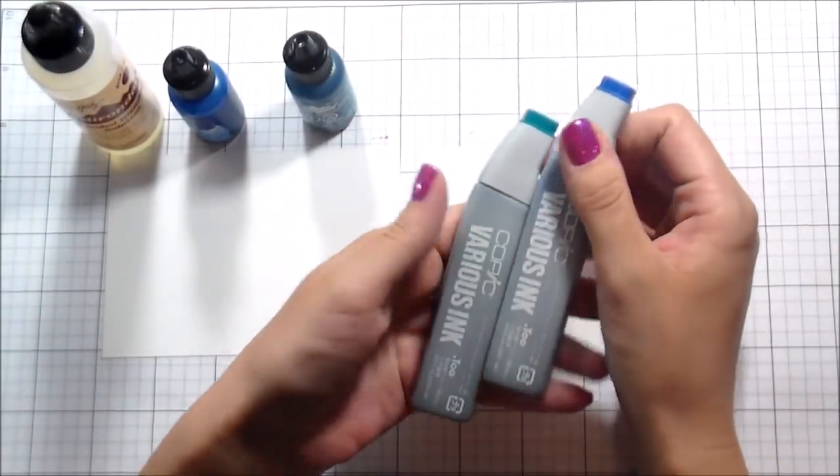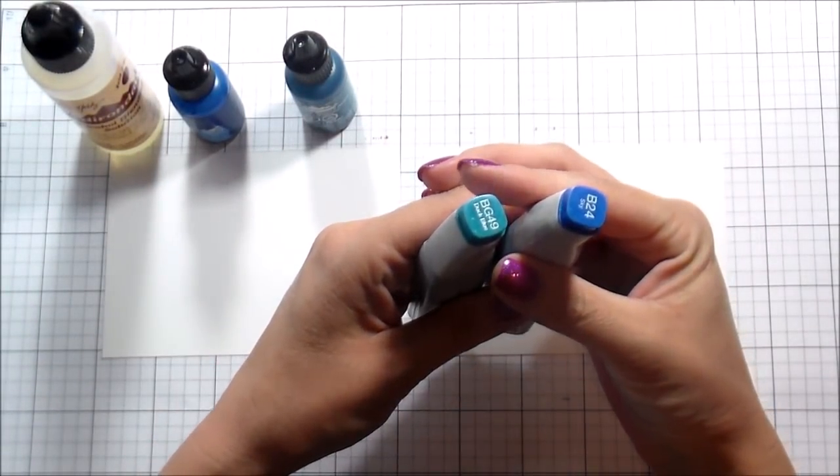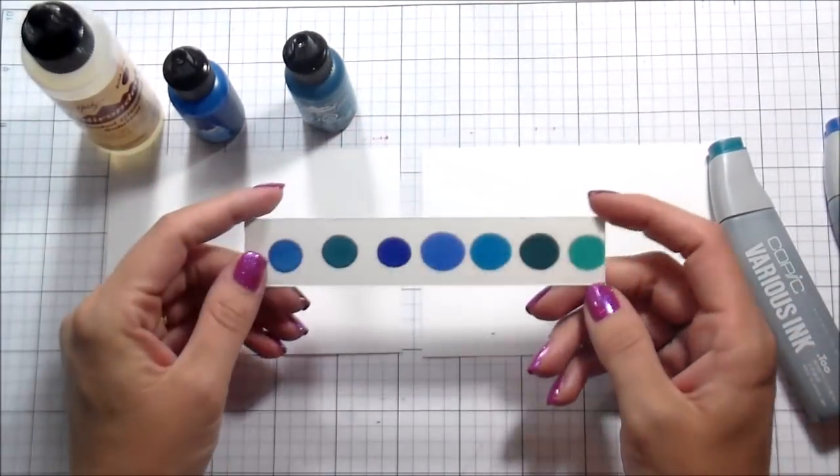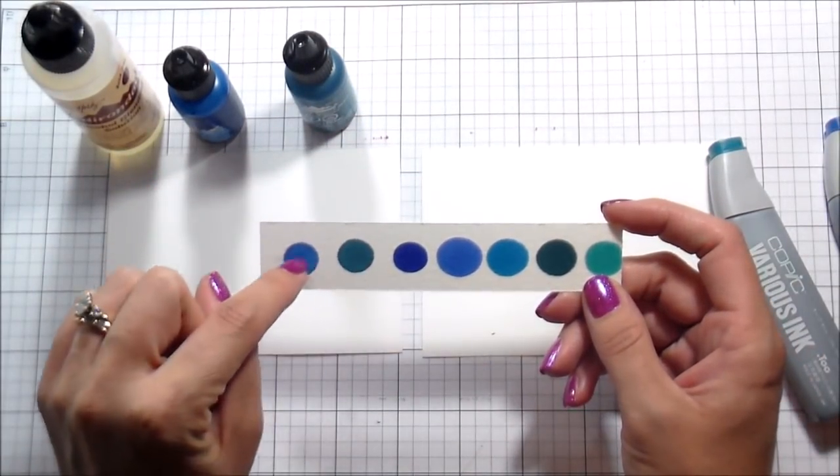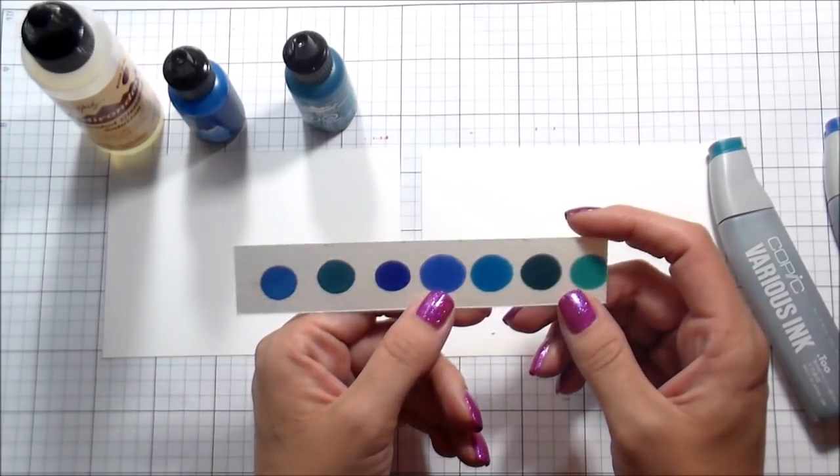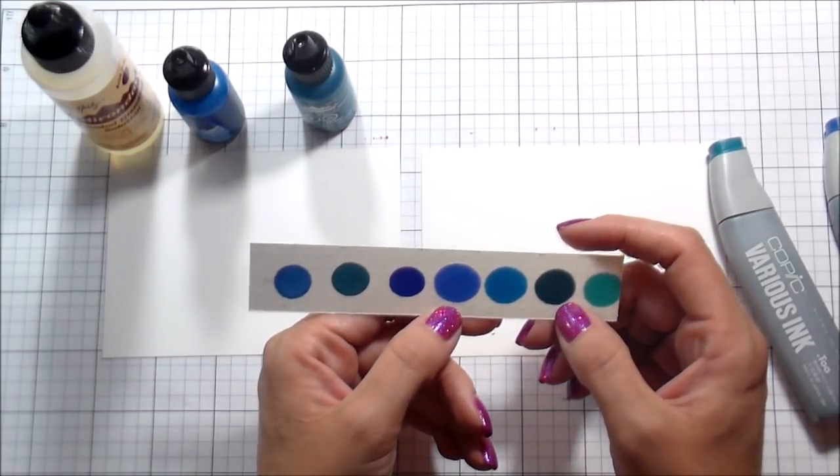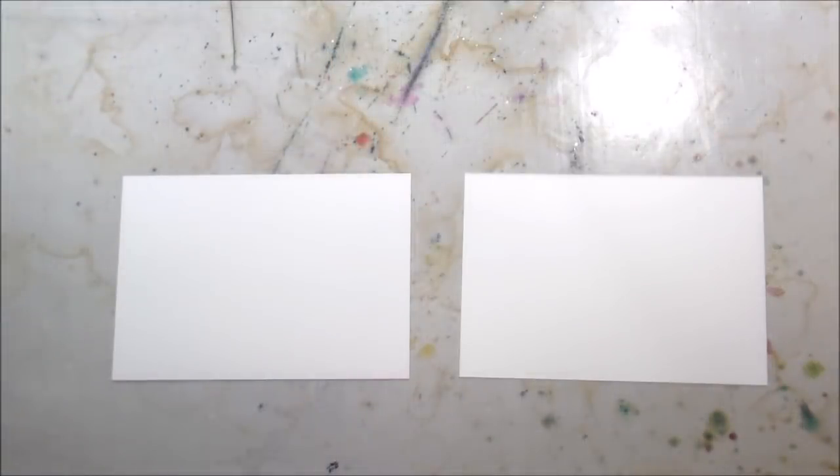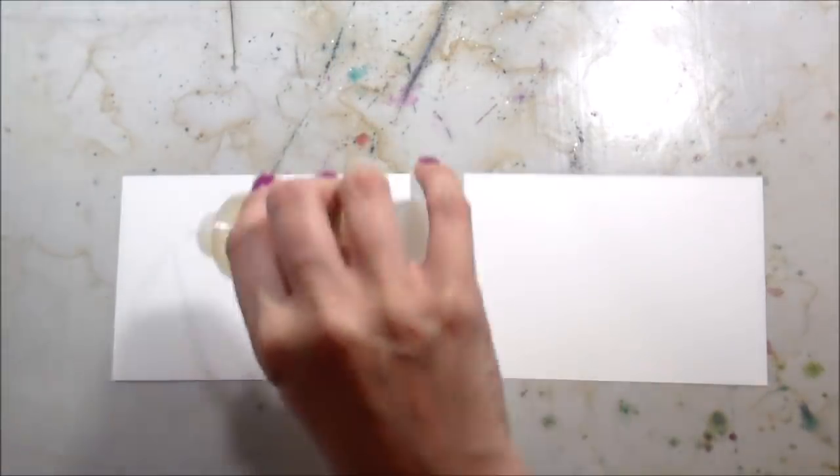So for this comparison, we're using actual alcohol inks and the mixative. And then for the other side, I'm going to use Copic reinkers, which are also alcohol based. I've had several people ask me if they can use those to get an alcohol ink background. And the answer is you can, the results are just a little bit different.